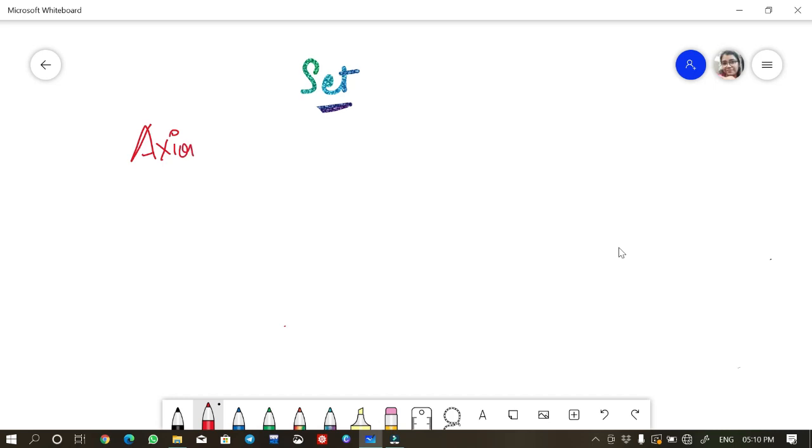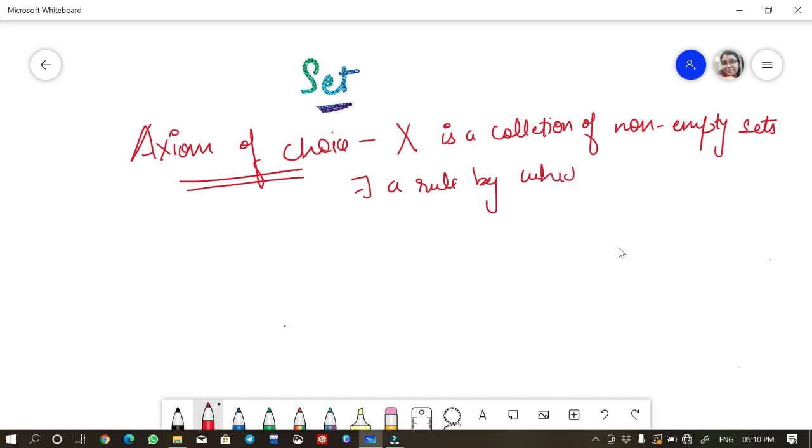Axiom of choice. By axiom of choice we mean that if X is a collection of non-empty sets, there exists a rule by which we can pick one element from each set. The key point here is all set should be non-empty because if a set is empty you cannot pick any element from that set.